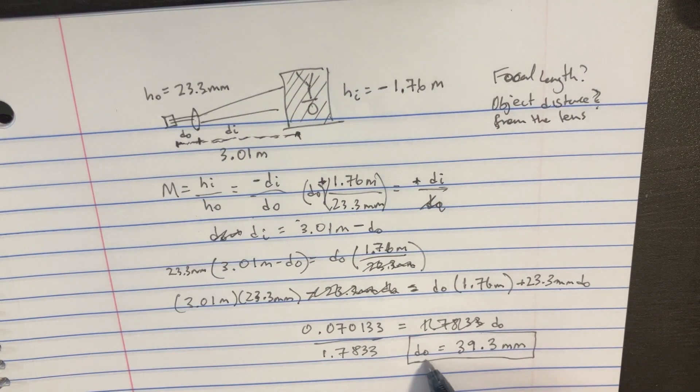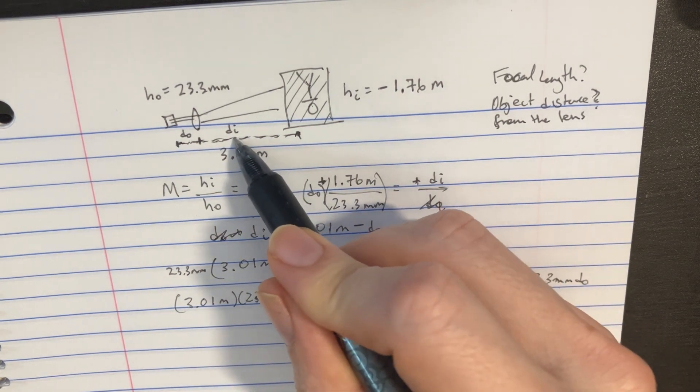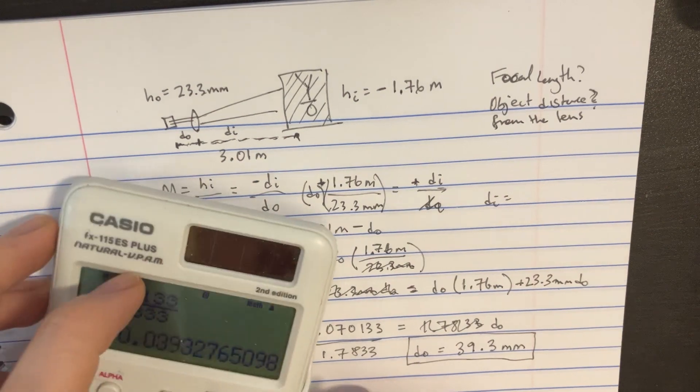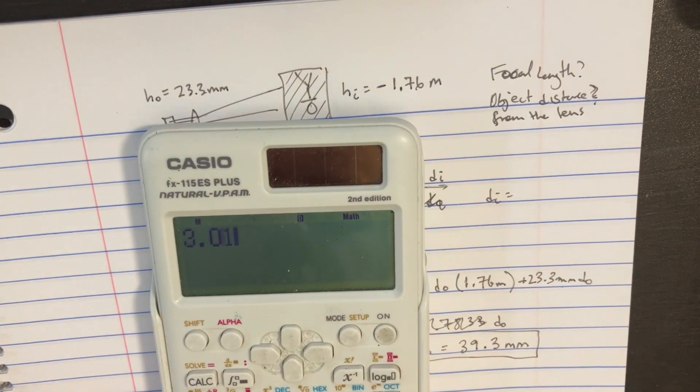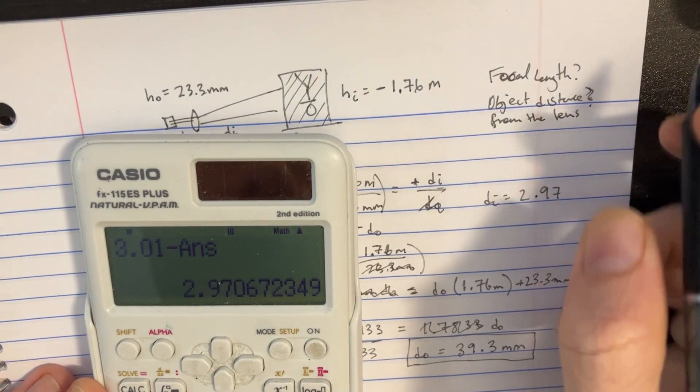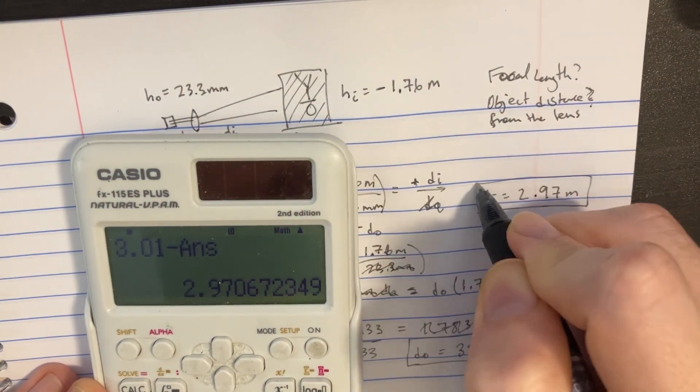Now that we know the distance to the object, we should also know the distance to the image. Let's just mark that over here. So we would take 3.01 minus the answer that we had over there, so we get 2.97 meters for the distance of the image here.